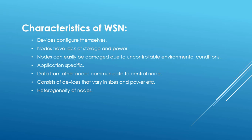Characteristics are what make wireless sensor networks different from other networks. Devices in a wireless sensor network configure themselves — they are able to self-configure within a network. Their nodes lack storage and power because they are very small in size. Nodes can easily be damaged due to uncontrollable environmental conditions, as the nodes in a wireless sensor network are inherently weak.